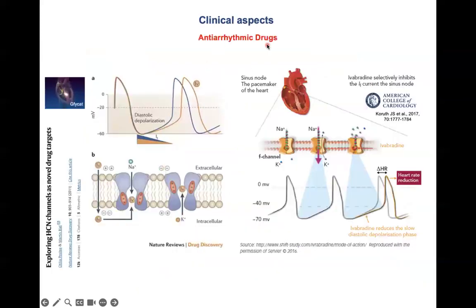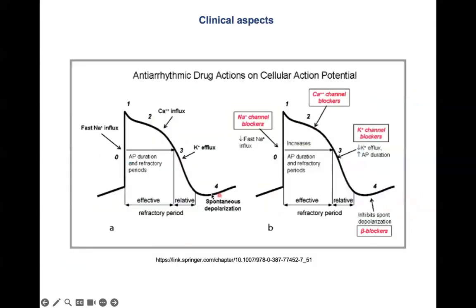Finally, some clinical aspects. For instance, the antiarrhythmic drug ivabradine inhibits the funny channels. It slows down the activity of the funny channels, which reduces the heart rate. Further candidates and clinical details will be discussed in follow-up parts.